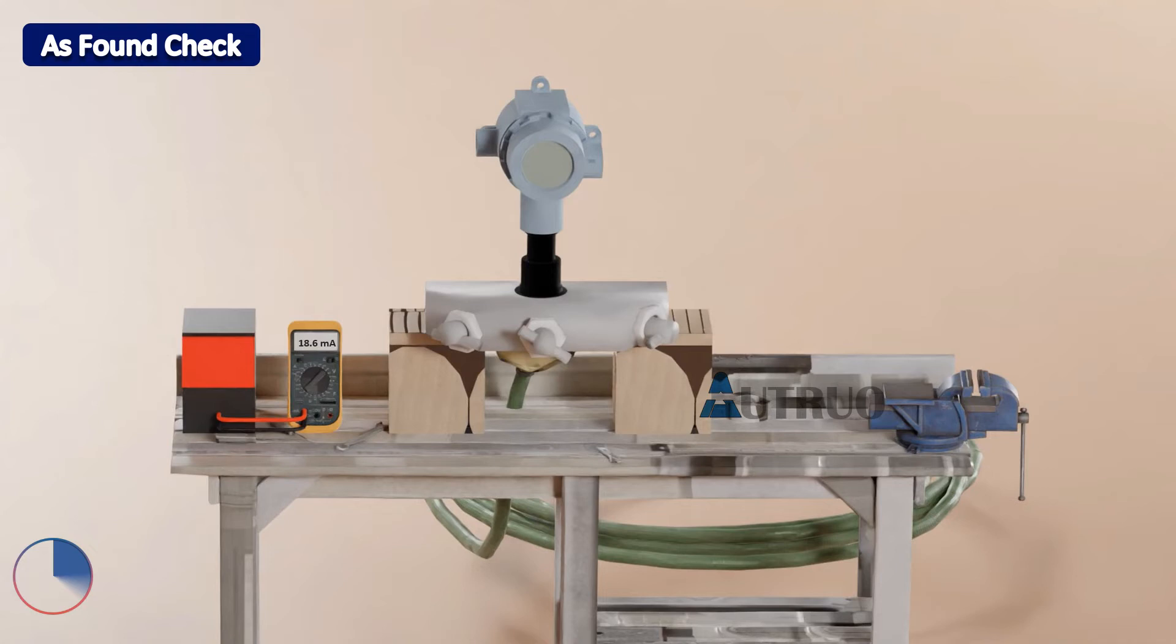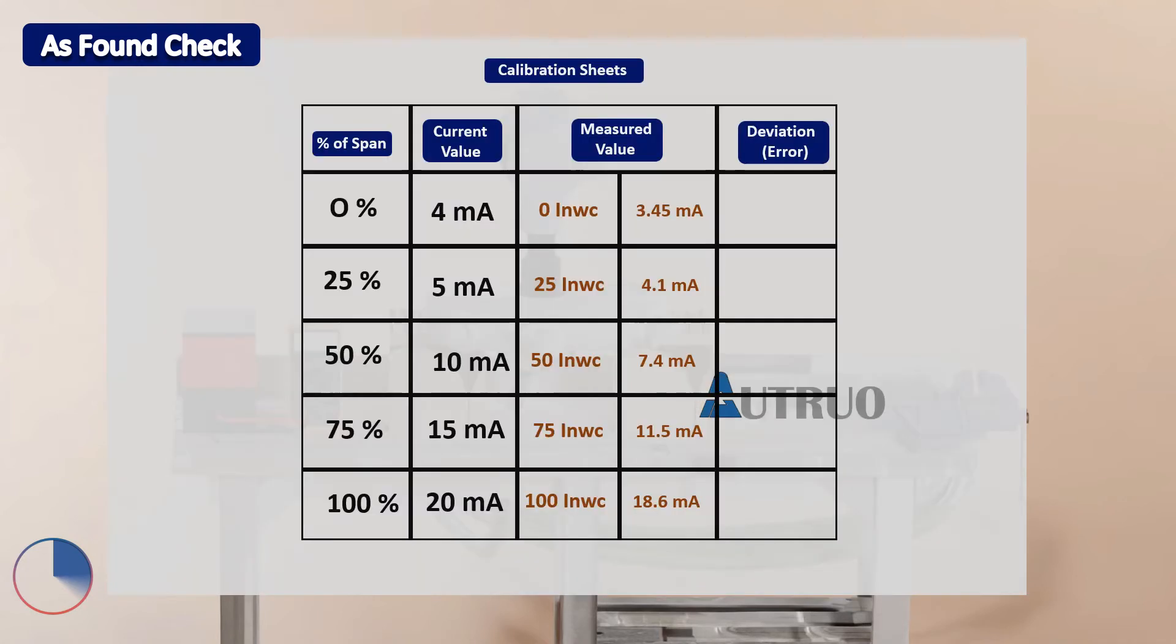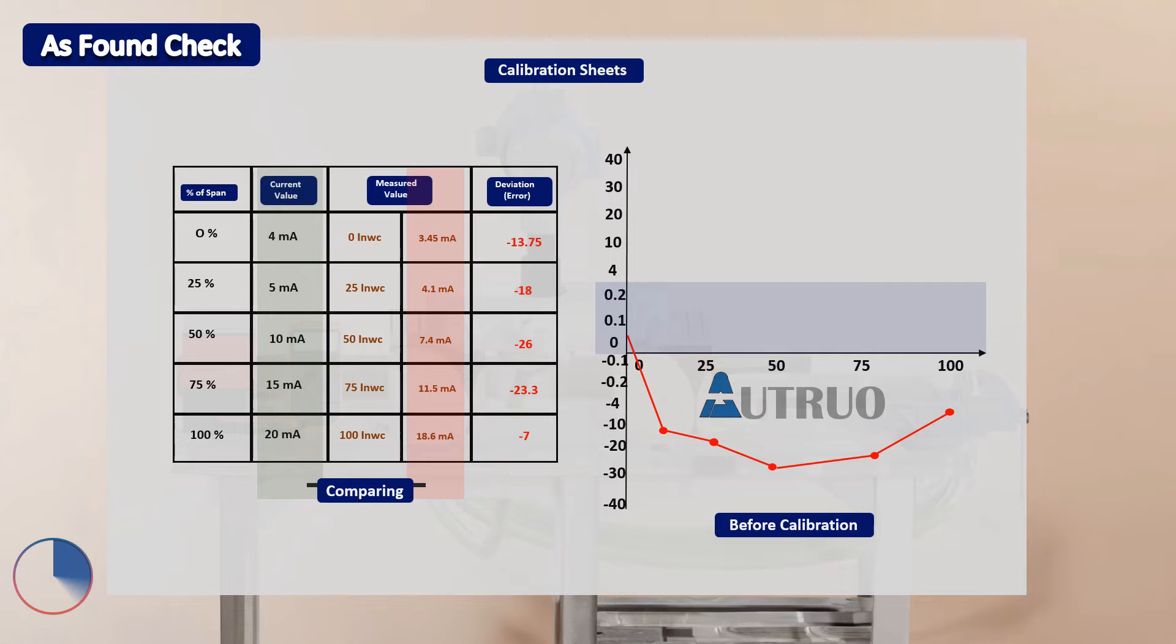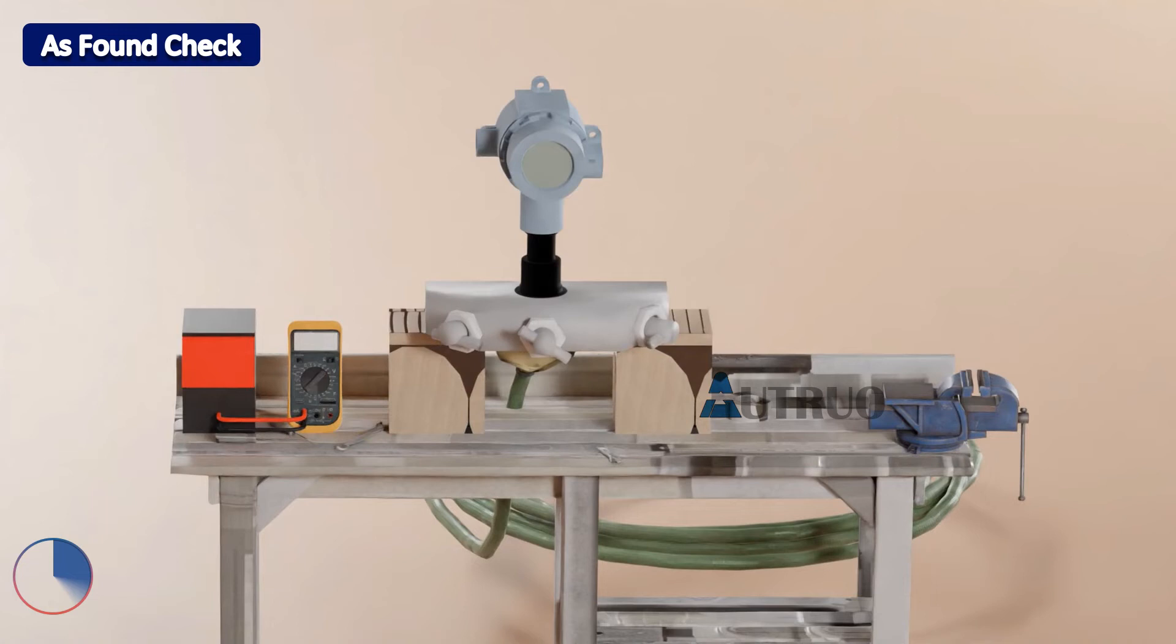Now let's compare all these values with the transmitter documents. As we can see, the current signal is far from what is expected as per manufacturer requirement. Again let's plot all these values on a graph for better understanding. As we can see from the graph, the current state of the transmitter is far from the range that is specified by manufacturer. Hence there is need for recalibrations.